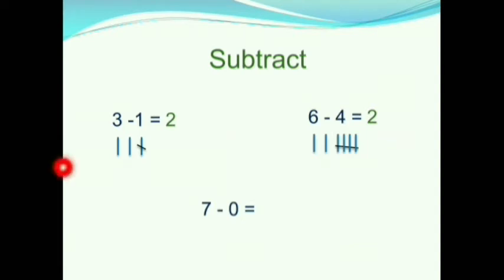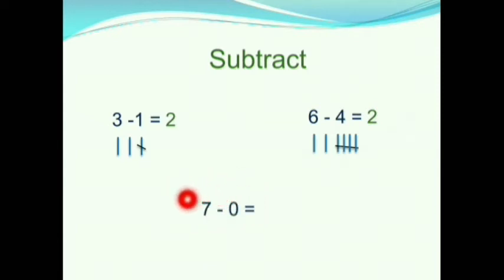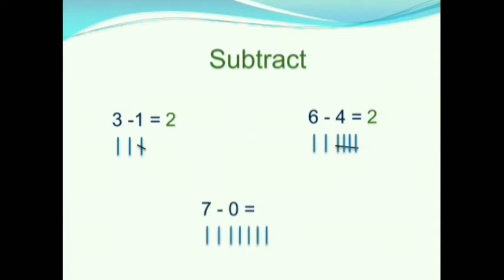Children, in this question we have 7 minus 0. We have first 7, so we will draw 7 lines. Next we have 0. 0 means nothing, so we should not cut any lines. So, 7 minus 0 is equals to 7.